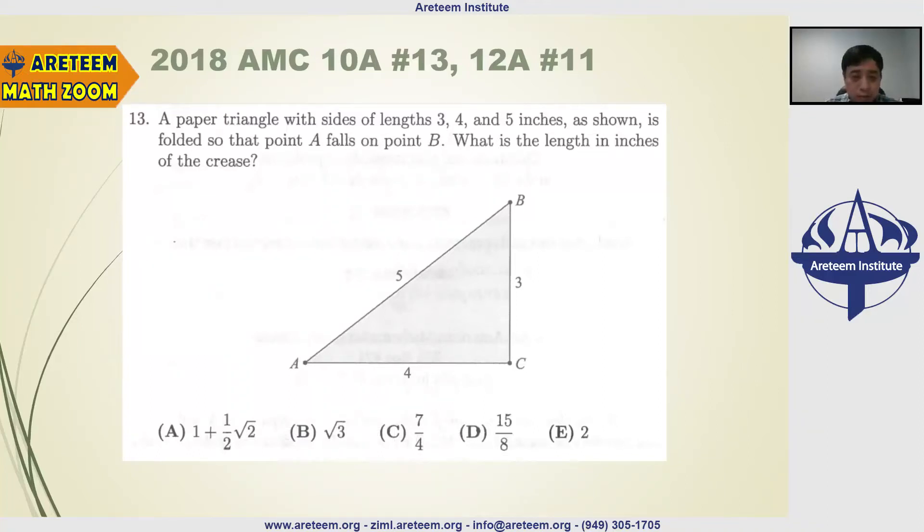Question number 13, and also 12A, question number 11. So this is a triangle, this is actually a piece of paper in a triangle shape, 3, 4, 5 triangle, that's a right angle.